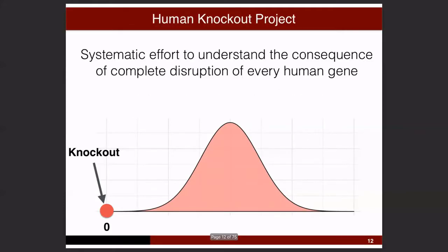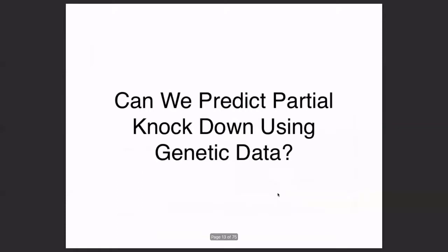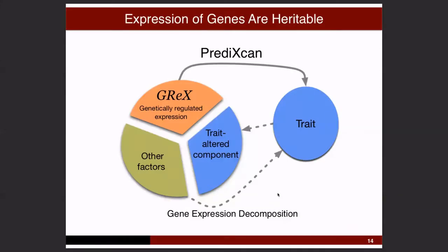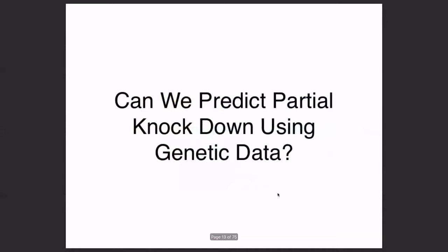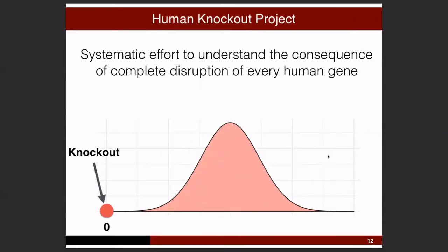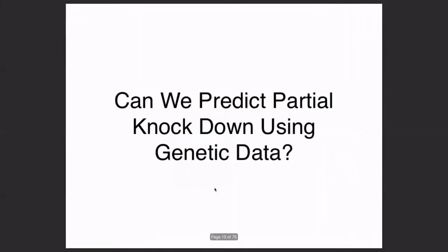Can we predict partial knockdowns — or whatever you want to call people with reduced but not zero gene function — using genetic data? We know many genes are heritable. How much of gene expression is heritable depends on the gene, but we know there is a genetically regulated component. That means we can predict the level of expression of a gene and place different individuals in this continuum of gene expression level or function.